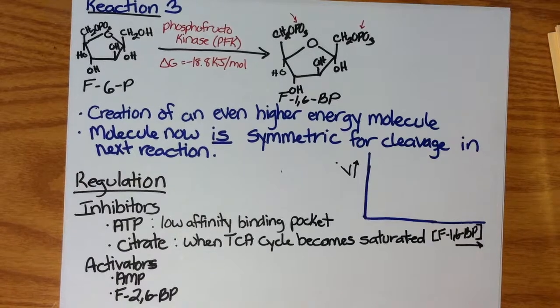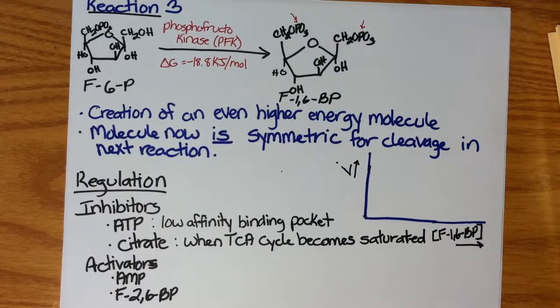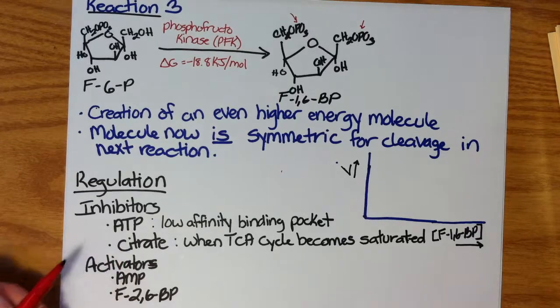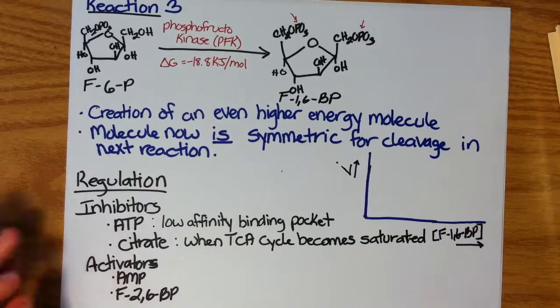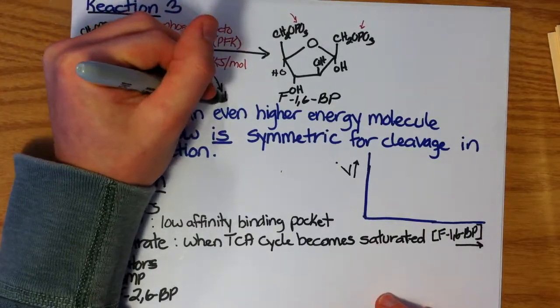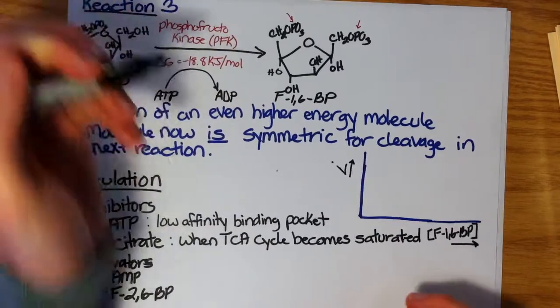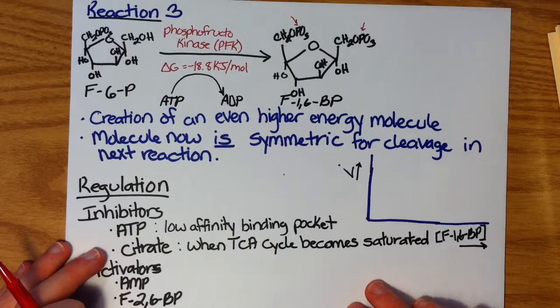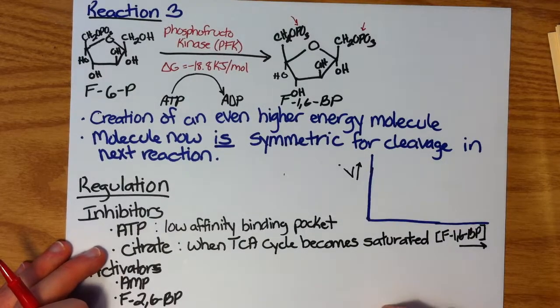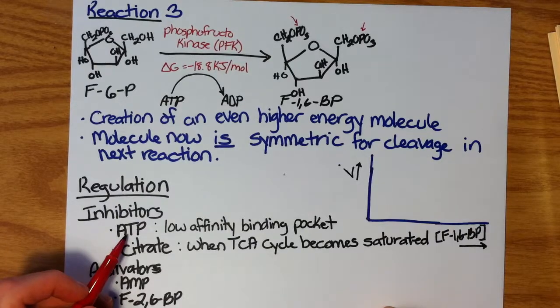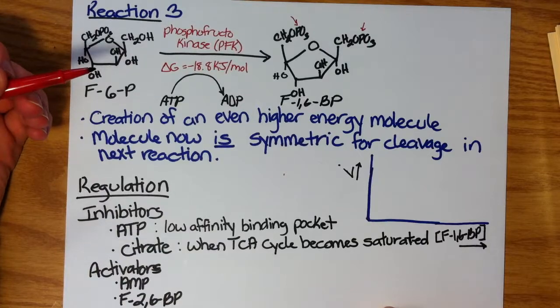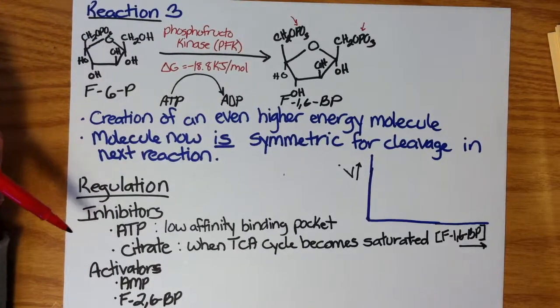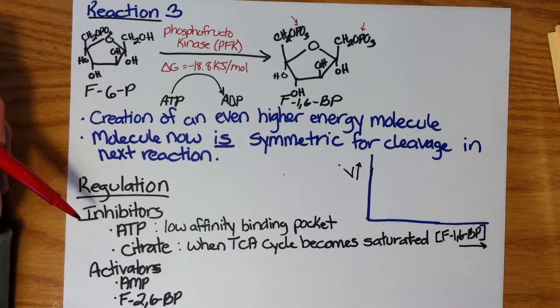The regulation of this enzyme is much more stringent than that of hexokinase. There are a couple inhibitors. We have ATP as an inhibitor, as well as citrate. Now you might be asking yourself, well, how can we utilize ATP here but also have it inhibit the enzyme? Well, the answer to that is there are two separate binding pockets for ATP on this enzyme. There's a higher affinity binding pocket and a lower affinity binding pocket. The inhibitor pocket has a relatively low affinity compared to its counterpart. So only under extremely high concentrations of ATP will ATP bind to the inhibiting pocket. Most of the time, it will bind preferentially to the active site.